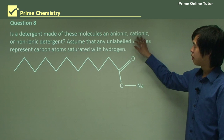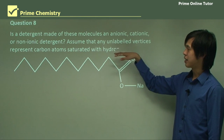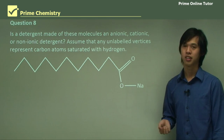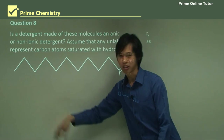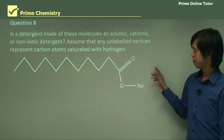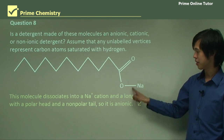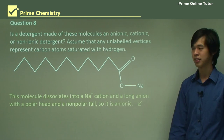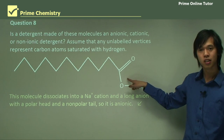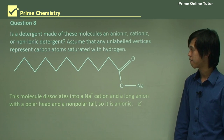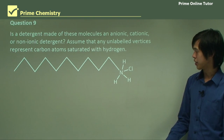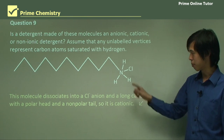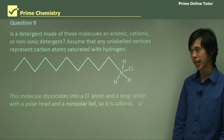Is a detergent made of these molecules anionic, cationic, or non-ionic? Assume unlabeled vertices represent carbon atoms saturated with hydrogen. This molecule dissociates into an Na⁺ cation and a long anion with a polar head — so this is an anionic substance; the sodium goes away and we have a negative charge, making it an anionic surfactant. For the next molecule, the chloride will probably go away — the chloride becomes a chloride ion and you get a positive head, which means it's a cationic substance.